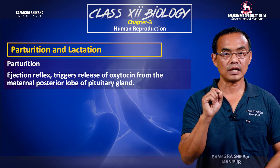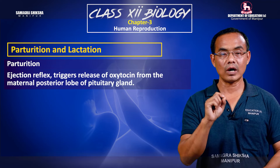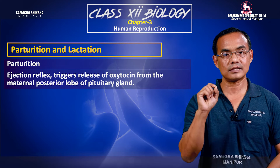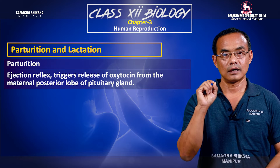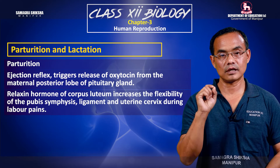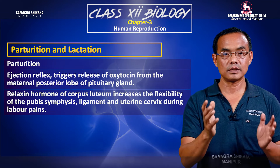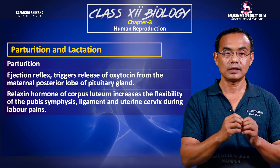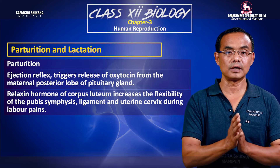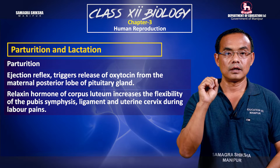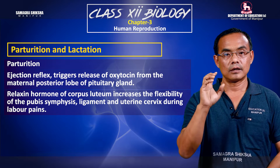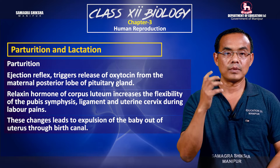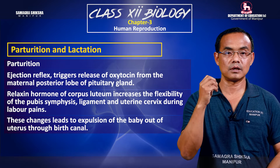The placenta and ovary corpus luteum play a very important role. Relaxin acts on the lower abdominal region, pubic symphysis, ligaments, and cervix, causing the tissue to become soft and relaxed to facilitate delivery.